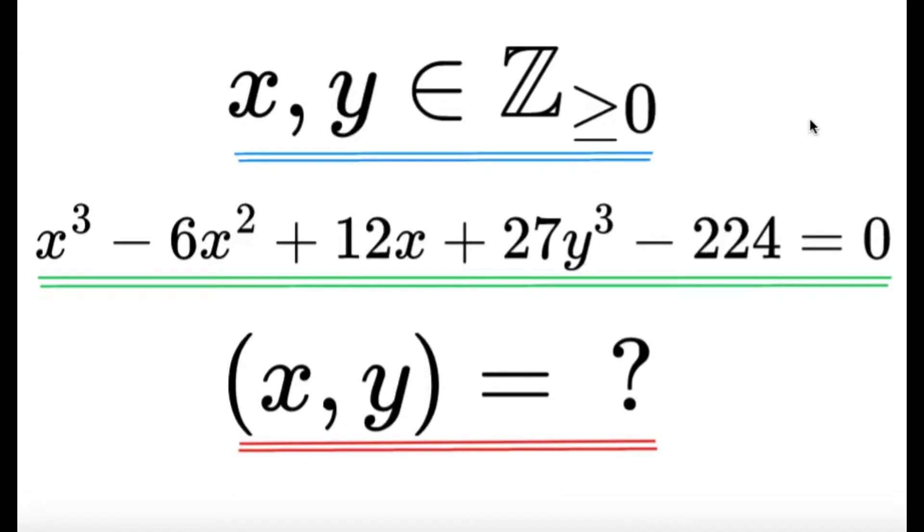Here's another item on number theory. x and y are non-negative integers such that the following equation is true: x³ - 6x² + 12x + 27y³ - 224 = 0. We're asked to solve for all possible ordered pairs (x, y).